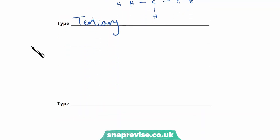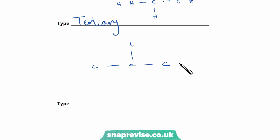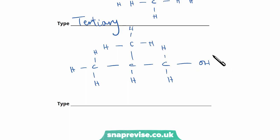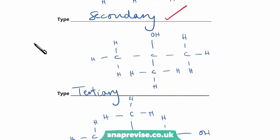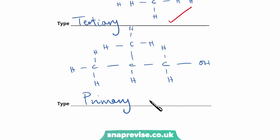Our fourth and final isomer is a little bit more difficult because we've been through all of the straightforward options. We could again have a three-carbon chain with a methyl group on our second carbon, but unlike the isomer we previously drew where the functional group was on the second carbon, we could have it on our first carbon. Filling in the rest of our hydrogens, we can see that the carbon our functional group is attached to is attached to only one alkyl group, so we have another primary alcohol. For each of our correct isomers identified as primary, secondary or tertiary, we receive one mark — getting us a total of four marks.